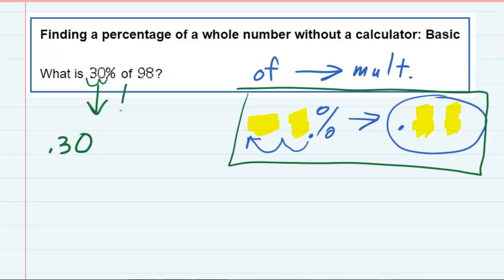And then the of becomes multiplication. And I'm just going to bring down the 98. So what we've done is we've changed this percent problem into a decimal problem.